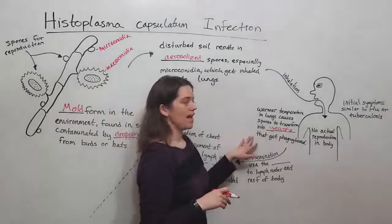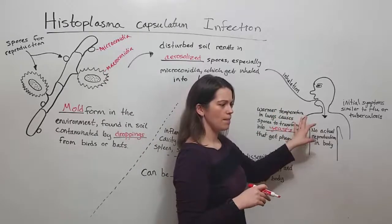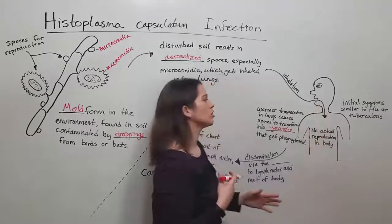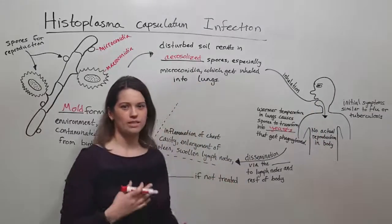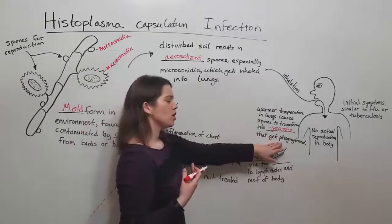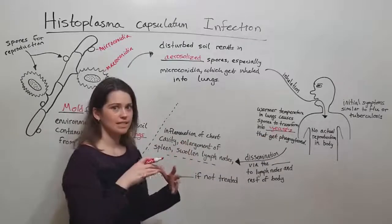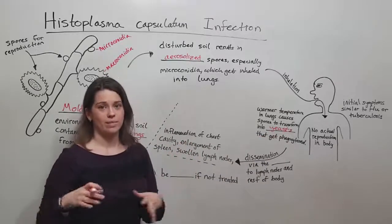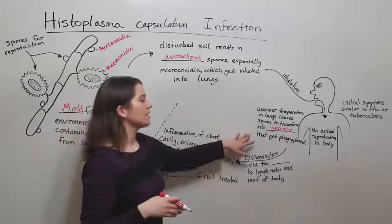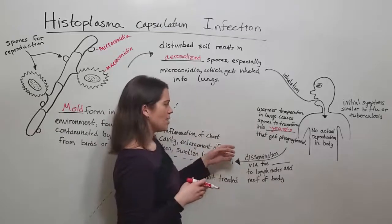And the yeasts then get phagocytosed. Now, during this initial period of infection, there are some symptoms that are similar to flu or tuberculosis, serious respiratory type symptoms. Now, phagocytosis is when cells from the immune system engulf the yeast cells in order to degrade them and get rid of them. Unfortunately, it tends to not work out so well. These phagocytic cells can't really handle the yeast so much.